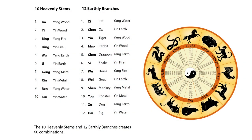The traditional Chinese calendar is based on the 10 heavenly stems and 12 earthly branches. The 10 heavenly stems include Jia, Yi, Bing, Ding, Wu, Ji, Geng, Xin, Ren, and Kui. The 12 earthly branches include Zi, Chou, Yin, Mao, Chen, Si, Wu, Wei, Shen, You, Xu, and Hai. The earthly branches are related to the zodiac signs or the 12 animal signs. When you combine the 10 heavenly stems and the 12 earthly branches, you can create 60 combinations.